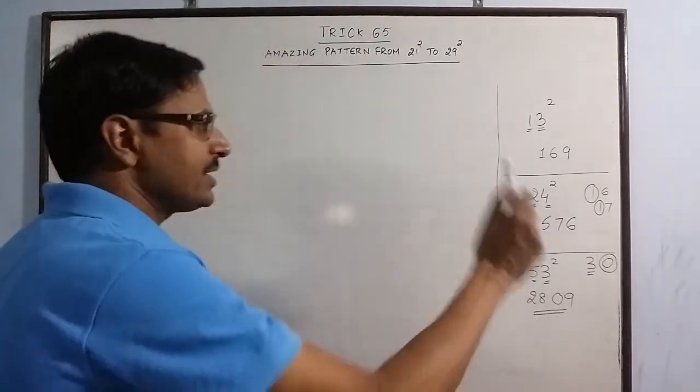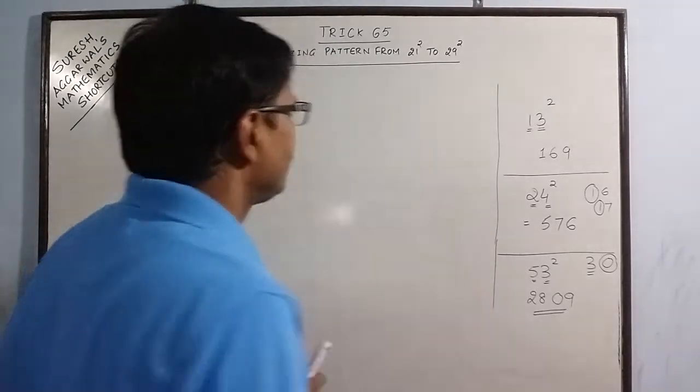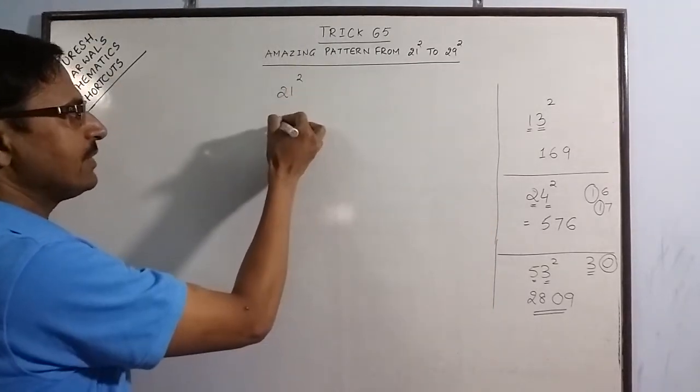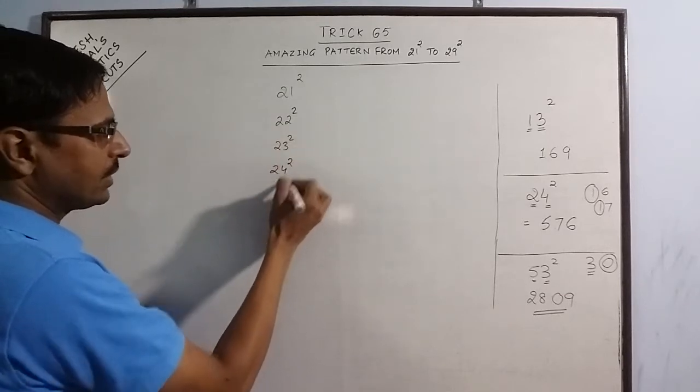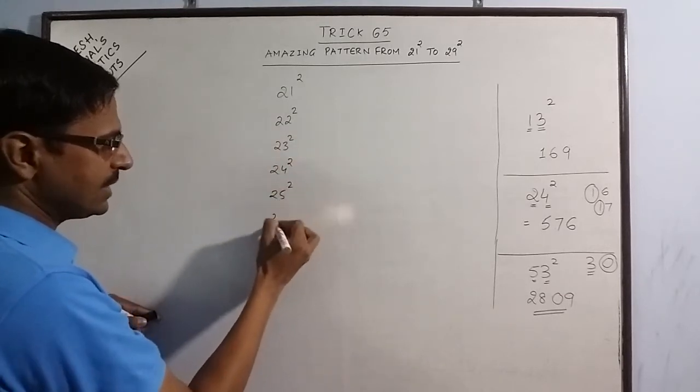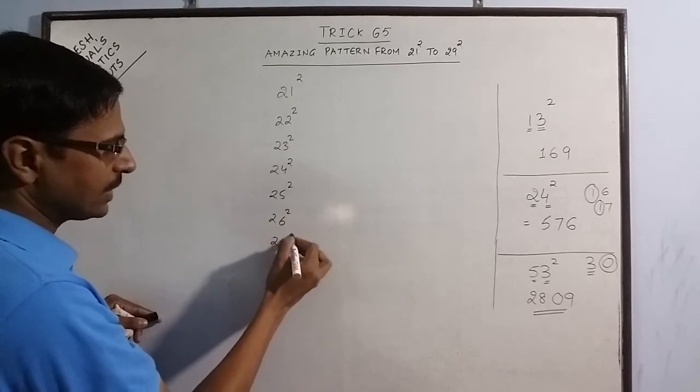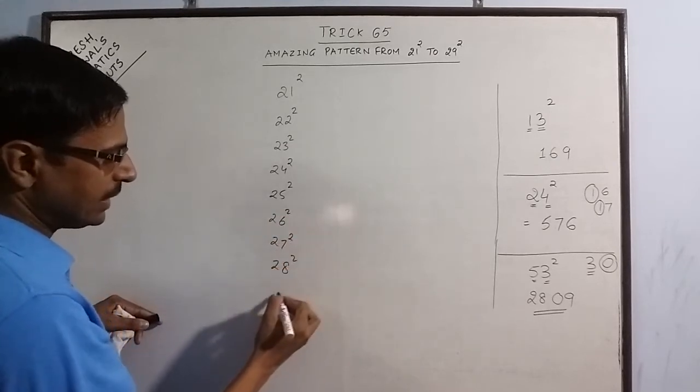Now let us generalize this result to some unique squares 21 square, 22 square, 23 square, 24 square, 25 square, 26 square, 27 square, 28 square and 29 square.